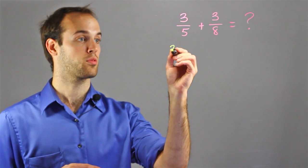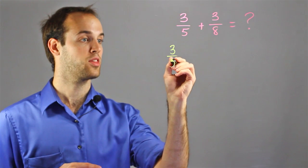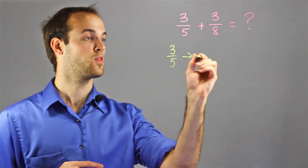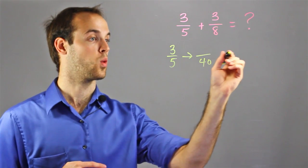So I'm going to need to change both 3 eighths and 3 fifths to a fraction over 40 in order to add them.